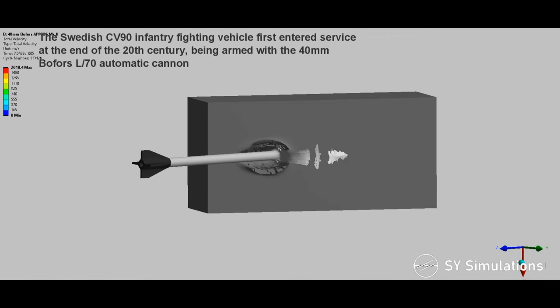The Swedish CV-90 Infantry Fighting Vehicle first entered service at the end of the 20th century, being armed with the 40mm Bofors L70 automatic cannon.